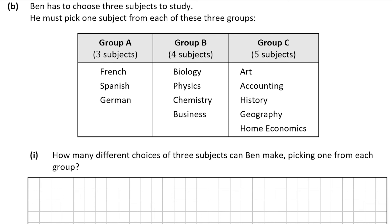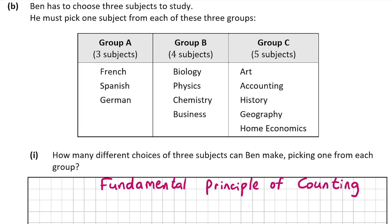Our job is to work out how many different combinations there are in total. We have a thing called the Fundamental Principle of Counting, which tells us that if there are a certain number of ways of doing one thing and another number of ways of doing something else, just multiply the total number of options together. In group A we have three options, four options in group B, and five in group C. So three by four by five: three by four is 12, and 12 by five is 60. Ben has 60 combinations. That's the answer for B part 1, worth five marks.